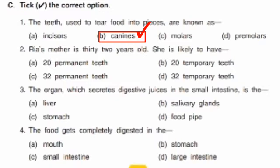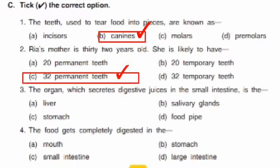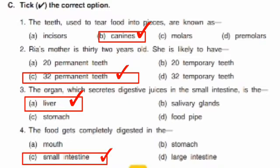She is 32 years old, so the correct answer is C — 32 permanent teeth. Third: the organ which secretes digestive juice in the small intestine is A, liver. Fourth: food gets completely digested in C, small intestine. Answers: one B canines, two C 32 permanent teeth, three A liver, four C small intestine.